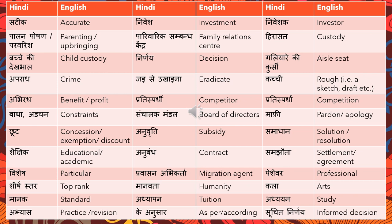'Vishesh' means particular or special. 'Pravasan abhikarta' means migration agent. 'Peshevar' means professional. 'Shirsh star' means top rank — for example, this university is at the top rank in Australia: 'Yeh vishwavidyalaya Australia mein shirsh star par hai.' 'Manavta' means humanity. 'Kala' means arts. 'Maanak' means standard. 'Adhyapan' or 'Adhyayan' means tuition or to study. 'Abhyas' is practice or revision. 'Ke anusar' means as per or according to. 'Suchit nirnai' means informed decision.